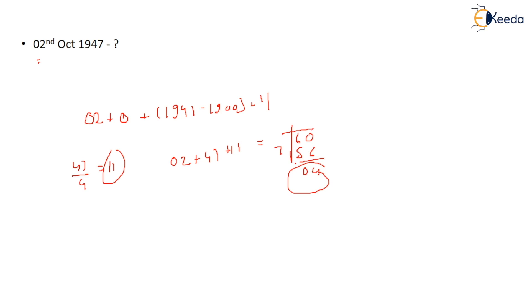This comes out to be 56, 0, 4. 0, 4 is code for what? Thursday. So you can check it by your own that whether that day was Thursday or not. So that was Thursday. Thank you.